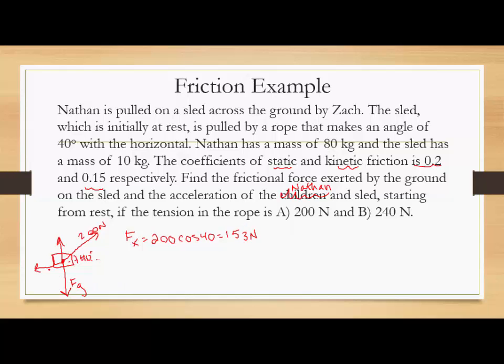So let's find our applied force in the x direction, which we're just going to call fx. And that would be 200 cosine 40 for this case. And that is 153 newtons. Now we need to find our static frictional force. If our static frictional force is less than this, the object will move and we can find our acceleration.